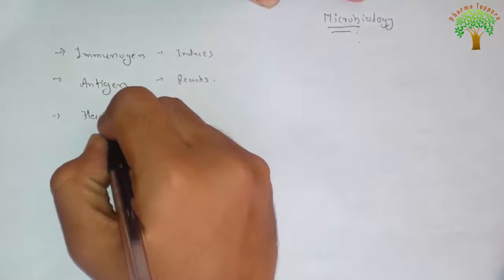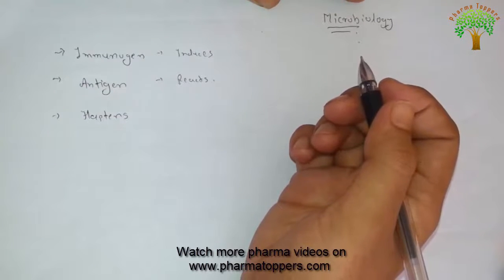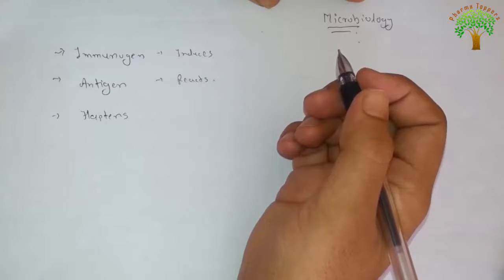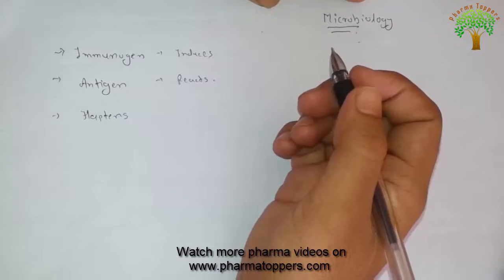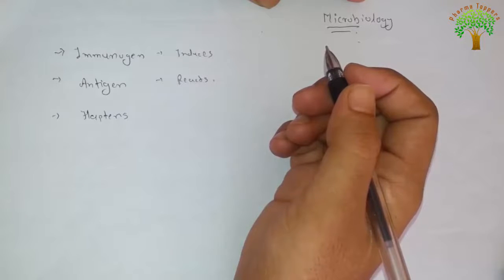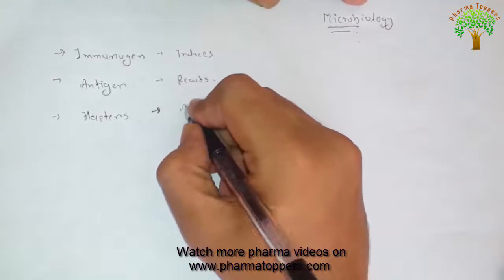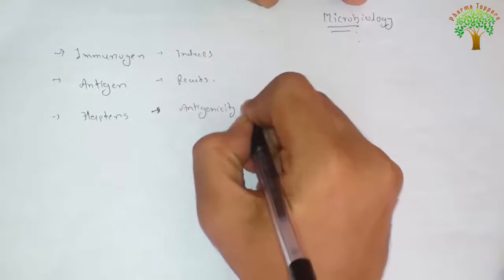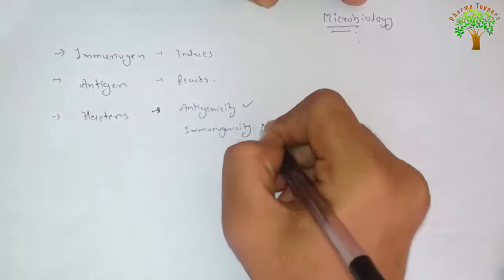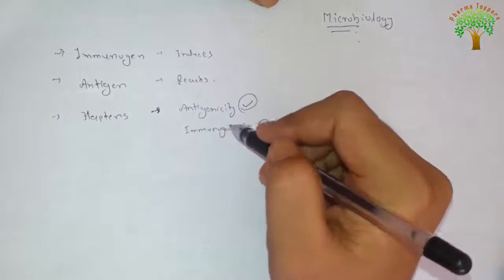Next is Haptens. Haptens are nonimmunogenic but can react with the products of the specific immune response. They are small molecules which cannot induce an immune response when administered by themselves, but can when coupled with carrier molecules. Haptens have the property of antigenicity but not immunogenicity — they can react with immune response products but cannot induce immunogenicity.